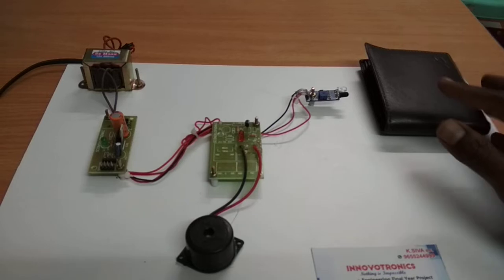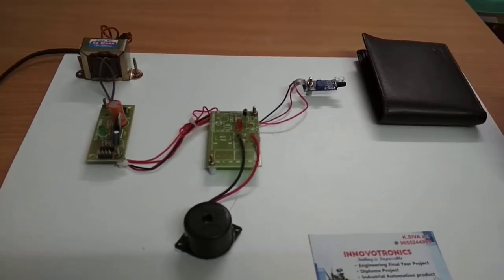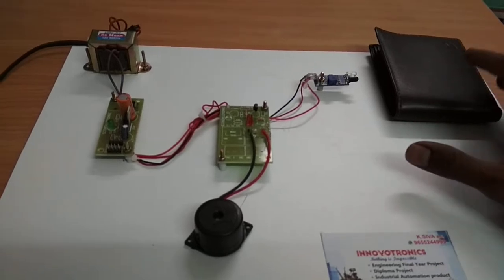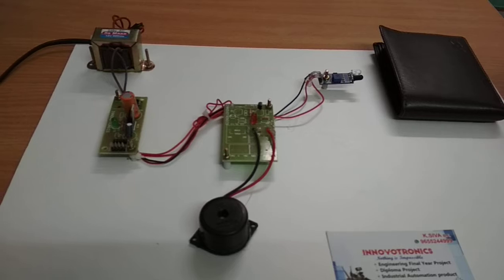This is object place. This is my purse. If the object present in this place, the system will keep silent. When the object is moving from this place, it will automatically detect and switch on the alarm.